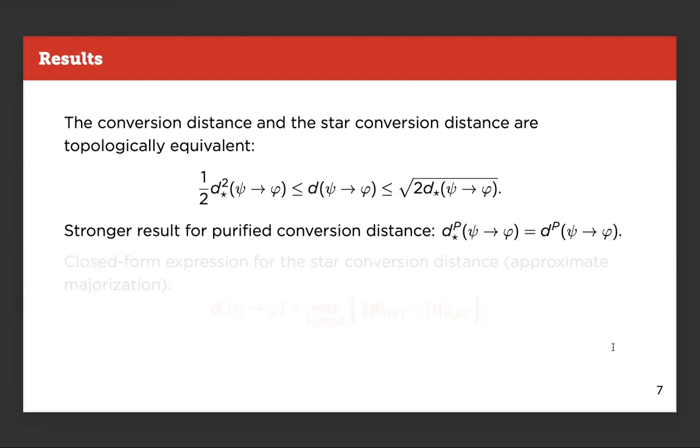For the people that work with the purified distance and like the purified distance model, it's worth mentioning that this topological equivalence is based on a stronger result on the purified distance. So, if one defines all the quantities, the d and the d stars, using the purified distance, one actually gets that in the case for the purified distance, d and d stars are actually equal, not only equivalent, but equal.